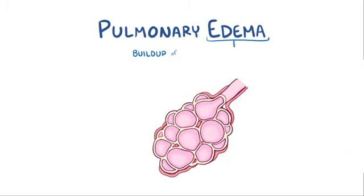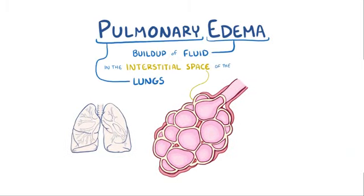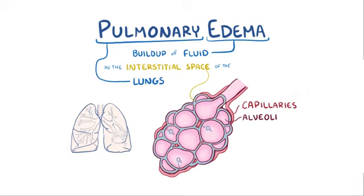Pulmonary edema refers to the buildup of fluid in the interstitial space of the lungs, which is the lung tissue space that's outside of the capillaries and in between alveoli, which are the tiny air sacs in the lungs. This space is mostly full of proteins, and when it starts filling up with fluid, it can make it hard for oxygen to cross over from the alveoli into the capillary, leaving the body hypoxic or deprived of oxygen.